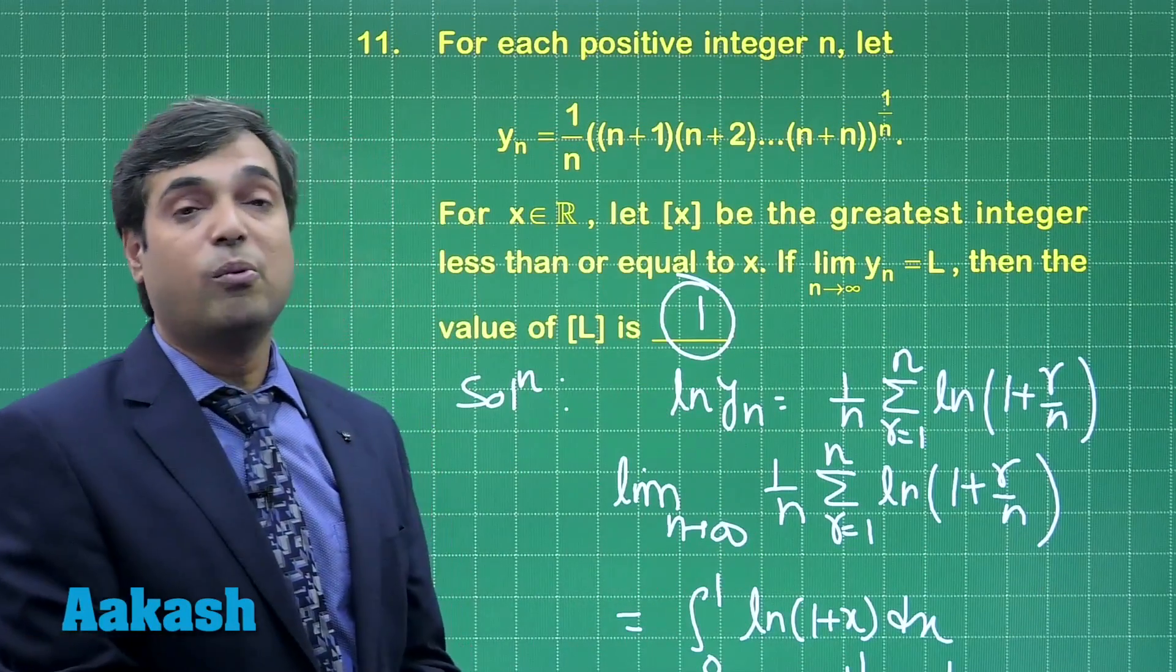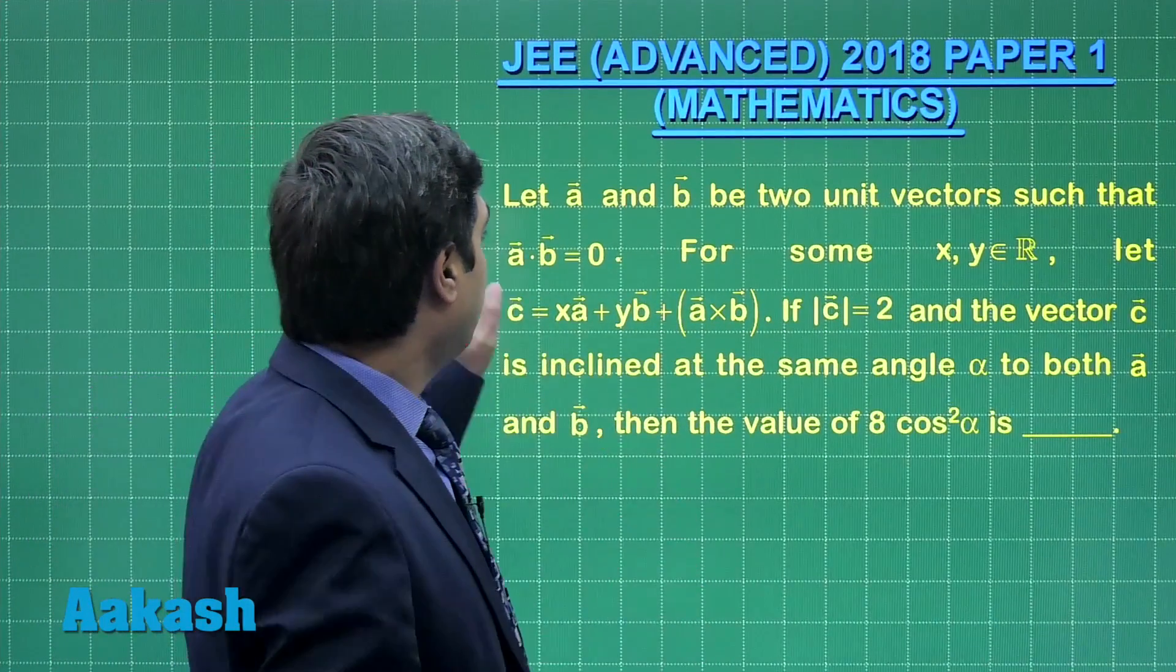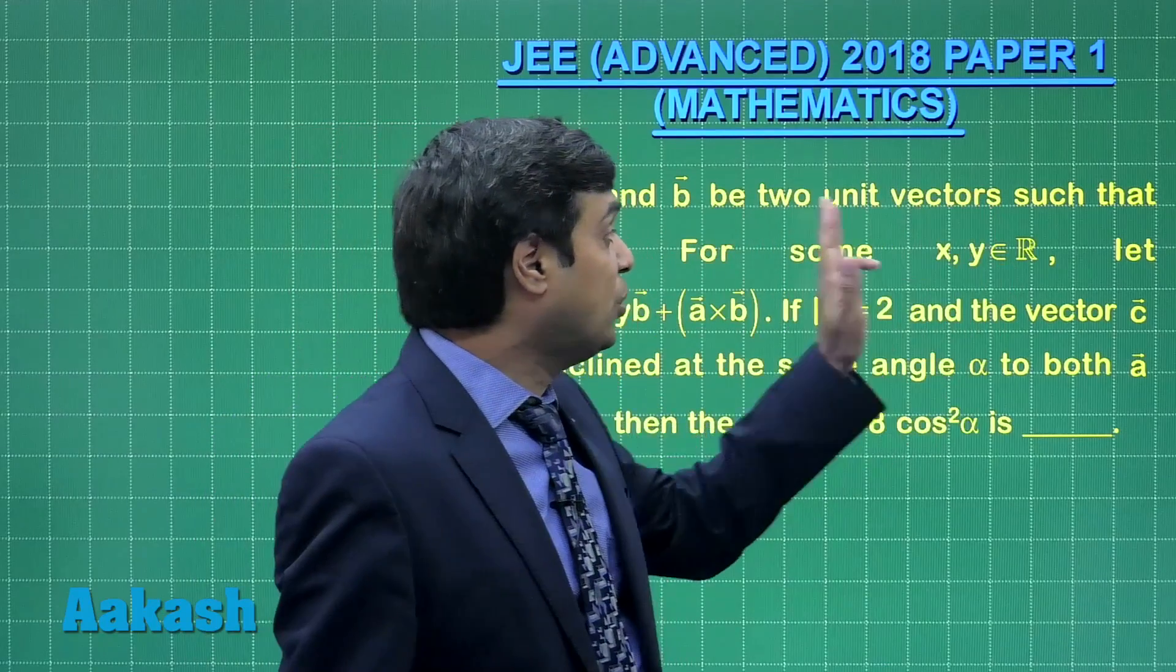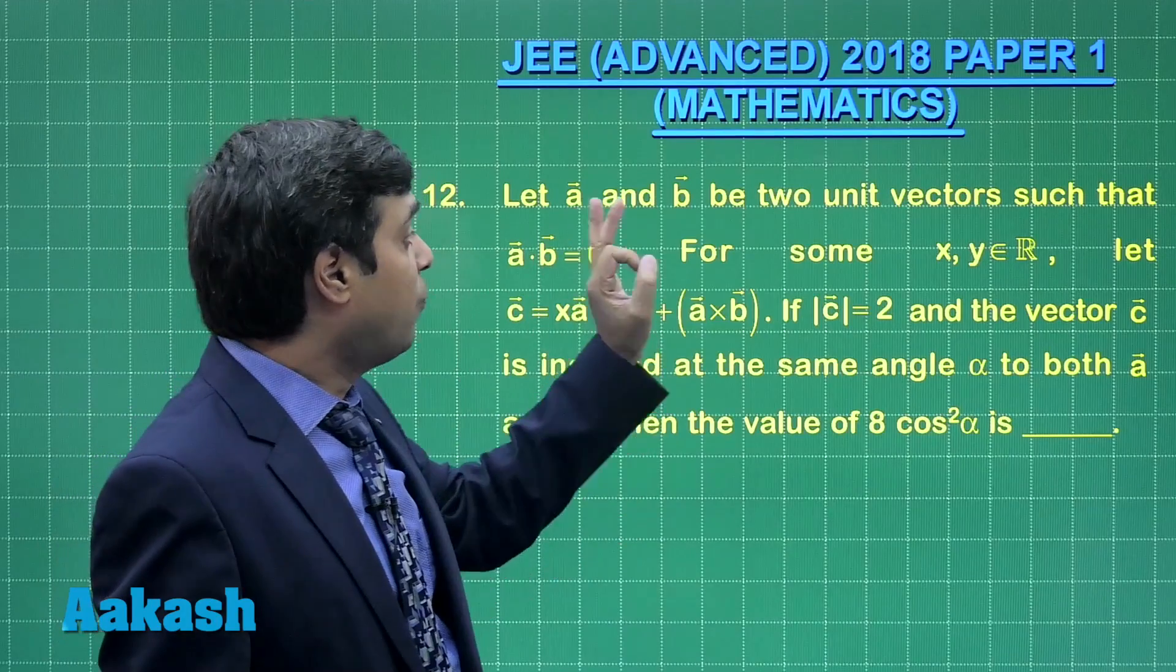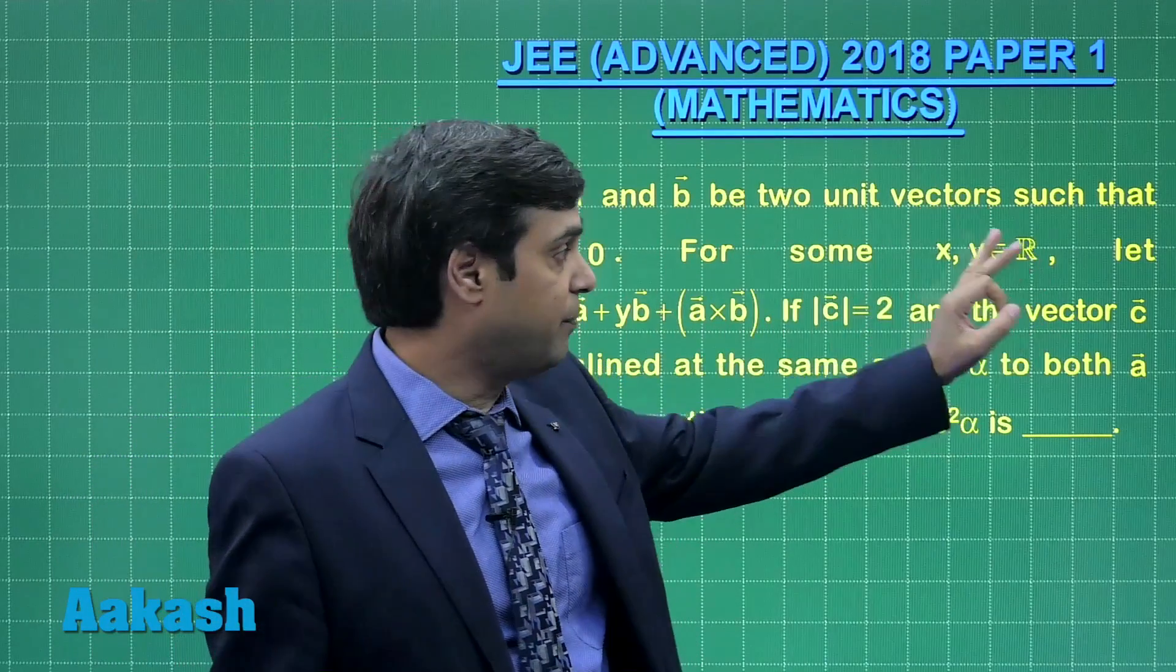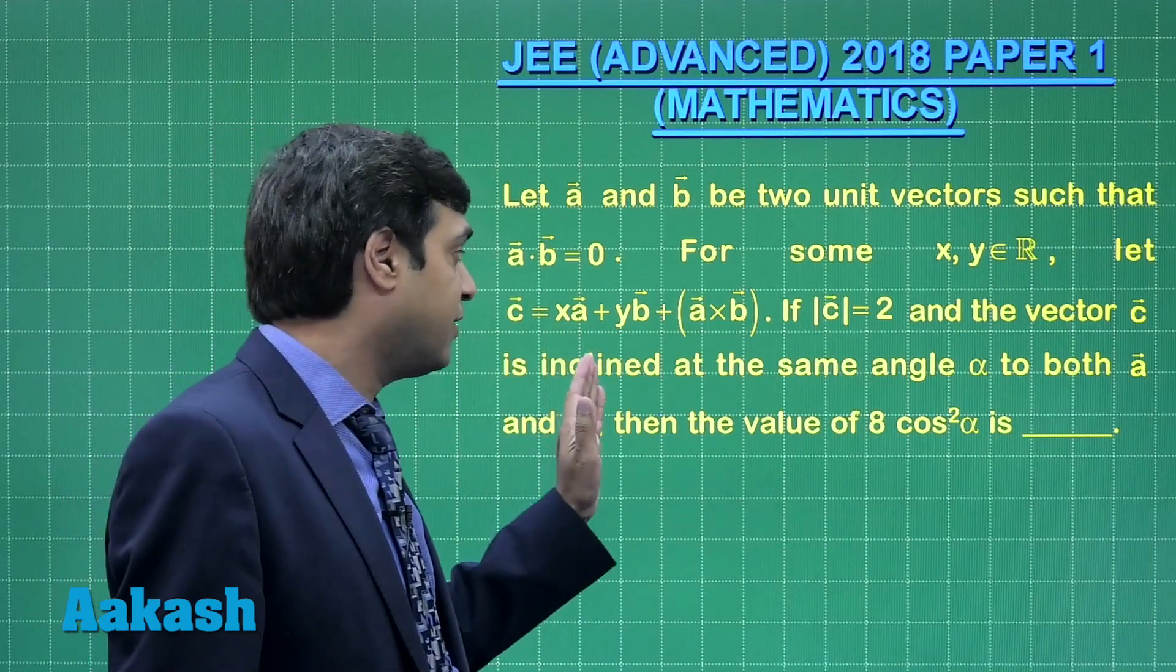This is clear. Now move to the next one, that is question number 12. Taking question number 12, let a and b be two unit vectors such that a dot b equals 0 for some x, y from real numbers.